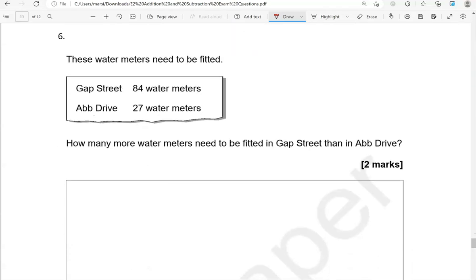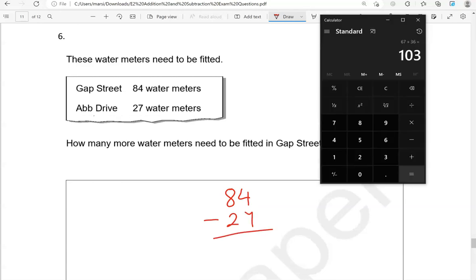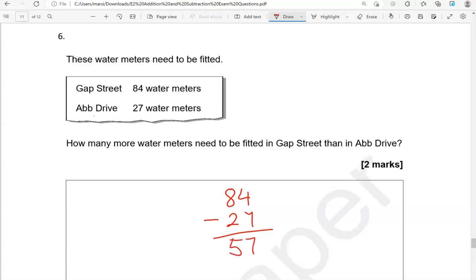These water meters need to be fitted. Gap Street, 84 water meters need to be fitted. Ab Drive, 27 water meters need to be fitted. How many more water meters need to be fitted in Gap Street than in Ab Drive? So how many more? We're going to work out the difference. So 84 take away the 27 should give us how many more. 84 take away 27 gives us 57 more.